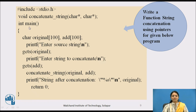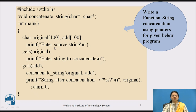Now pause the video and try to write a function for string concatenation using pointers for this given main program. In the main program, void concatenate_string is declared, with two strings: character pointer 'original' and character pointer 'add'. The user enters the source string into 'original', and the string to concatenate into 'add'. You need to write this function, and once it runs, you print the 'original' string. Try for this.